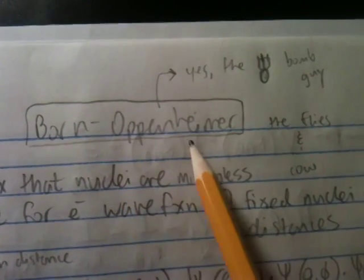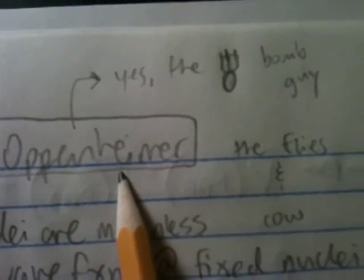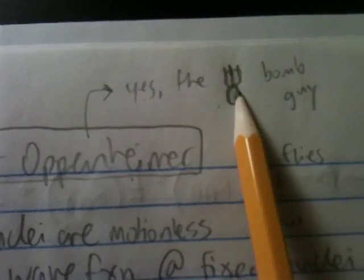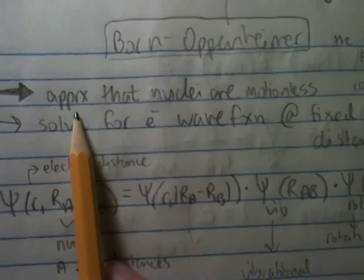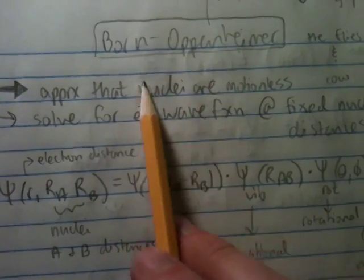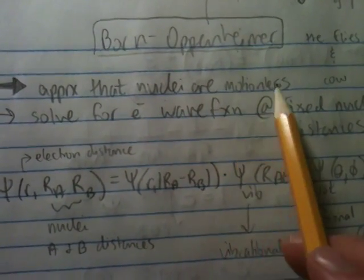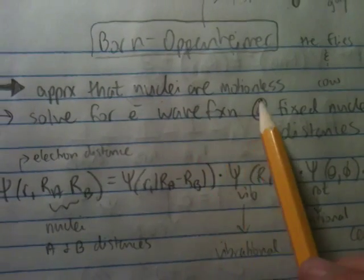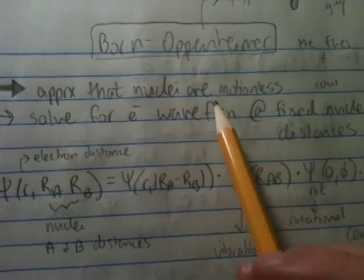Born Oppenheimer approximation. Yes, if you're wondering, the Oppenheimer from The Bomb. So he's the bomb guy. It's an approximation that says that the nuclei of some molecule, atom,